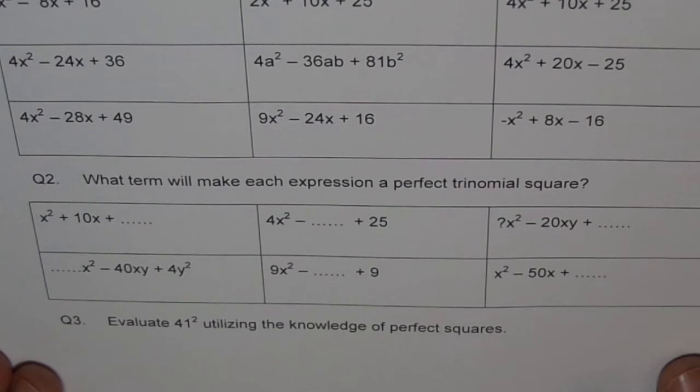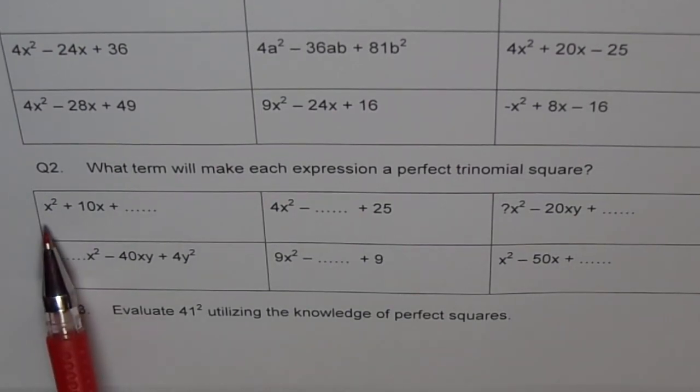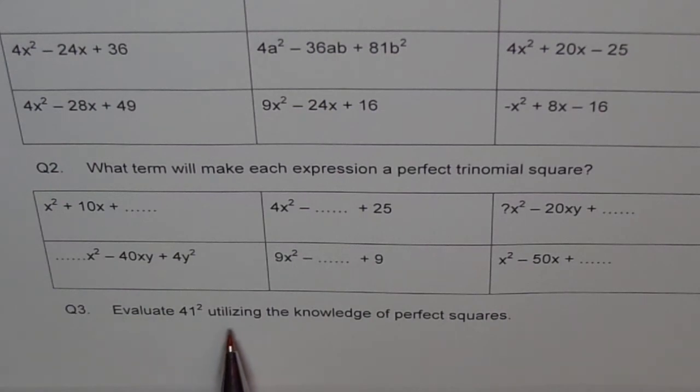Copy question number 2 and question number 3. Question number 2: what terms will make each expression a perfect trinomial square? Remember, this square plus this square and the center term is twice those two. Use that and get your terms. Last and not the least, evaluate 41 squared utilizing the knowledge of perfect square. Does it make any sense to you? 41 squared could be written as 40 plus 1 whole square. So it becomes kind of a perfect square and you can expand it as a squared plus 2ab plus b squared. a is what for you? 40 and b is 1. Easy, right? 40 squared is 1600 and 1 squared is 1 and twice 40 and 1 is how much? 2 times 40 and 1 is 80. Add the three terms. You get a trinomial. Add the three terms and get your answer.